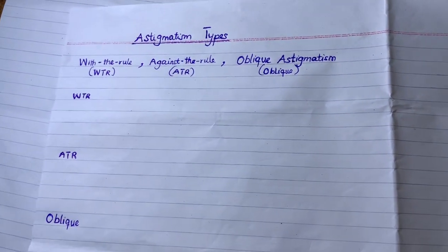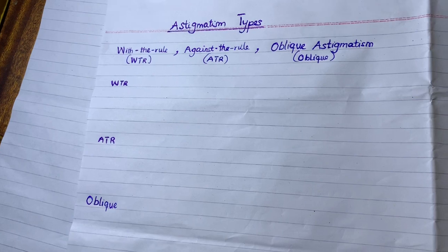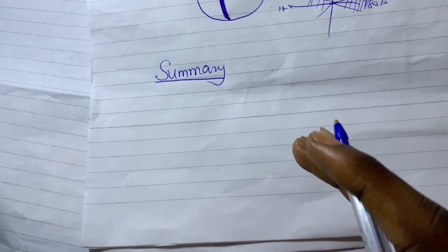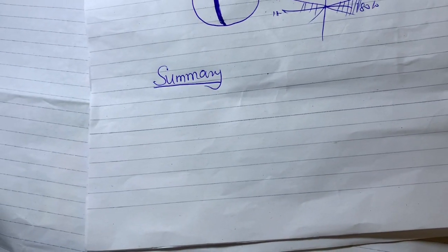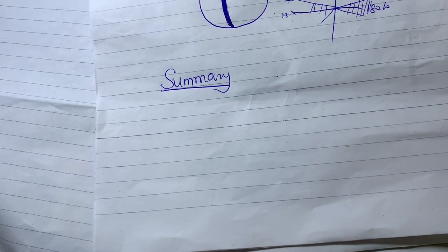In this video, we consider a simple aspect of regular astigmatism: what is with-the-rule astigmatism, against-the-rule astigmatism, and oblique astigmatism. You need to know the various lens forms and whether they are with-the-rule, against-the-rule, or oblique — because you may be given prescriptions in either plus or minus cylinder form and must be able to classify them.